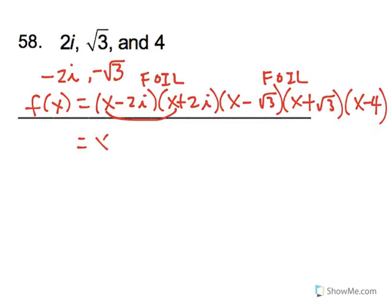So from the first one, we will have x squared plus 2ix minus 2ix for the inner term, and the last term is going to be minus 4i squared.